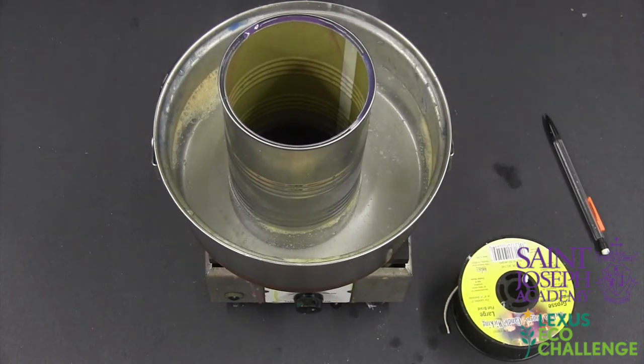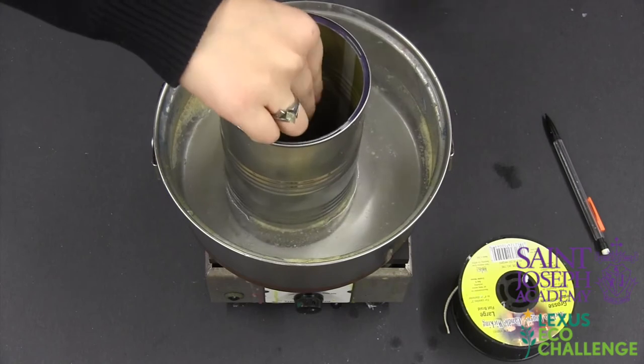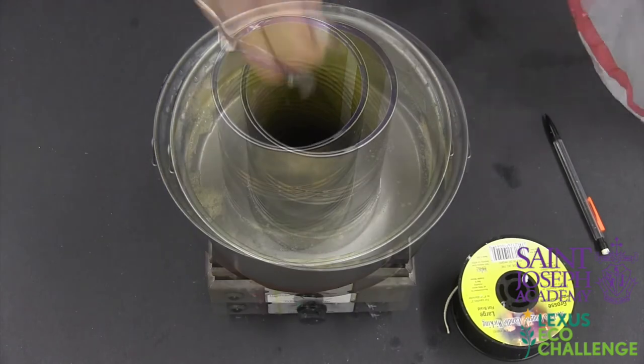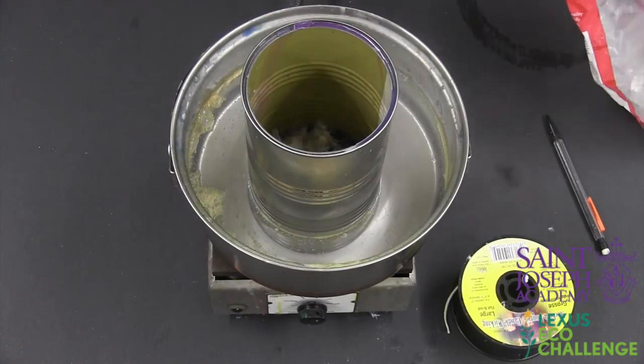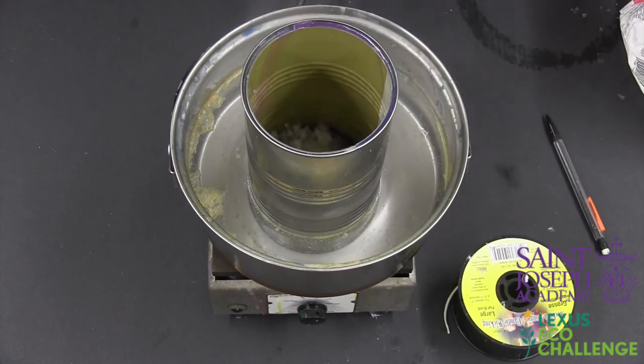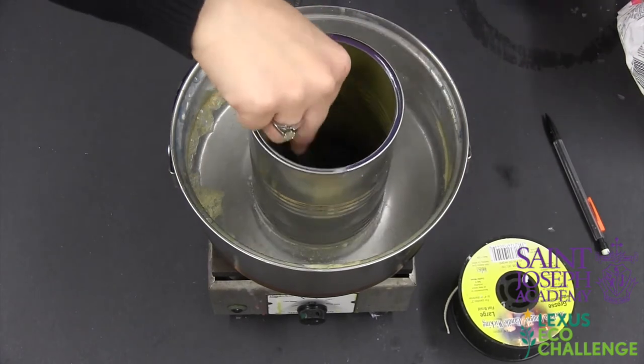This last step is optional depending on if you chose to use the plastic number 4 in your candle or not. But if you do choose to use the plastic in the candle, add a little bit at a time and stir in between each couple of handfuls.